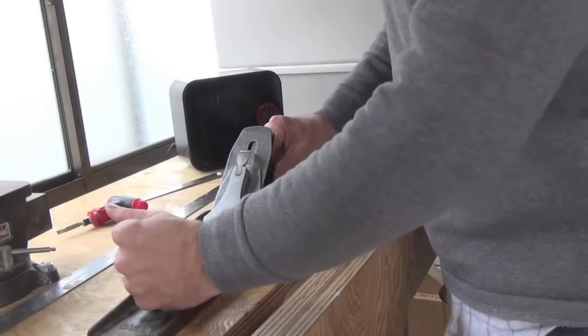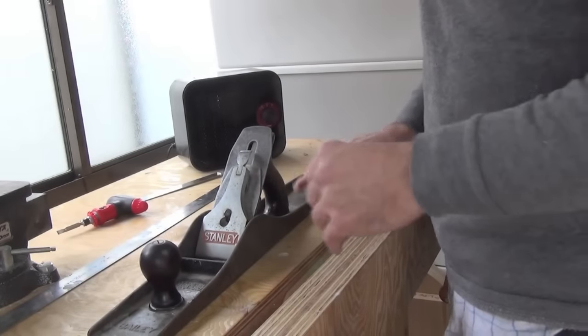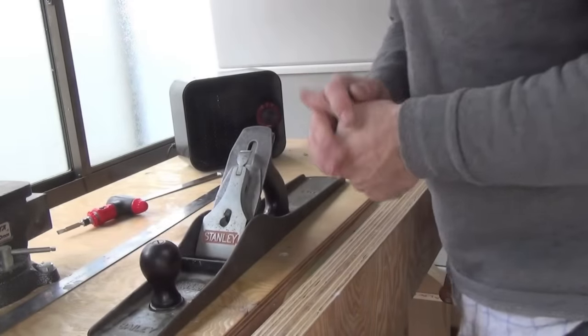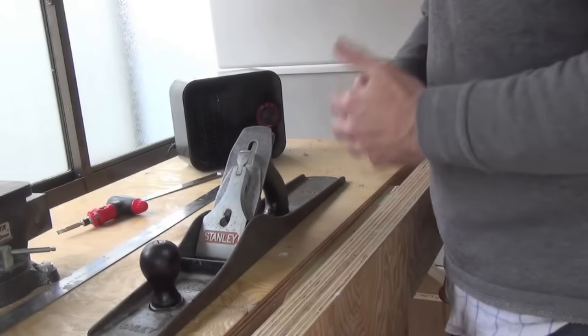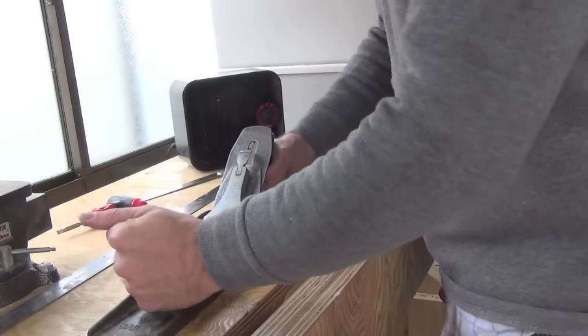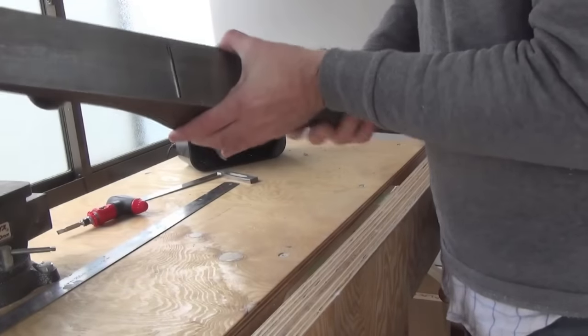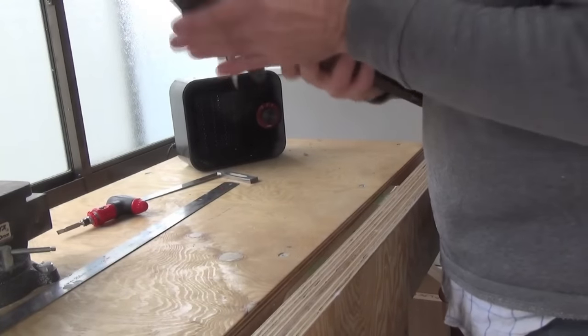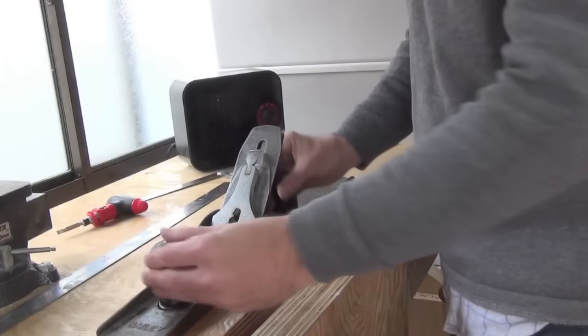Now the first job with a plane of this type—well people do it in different orders. Some people take all the parts off, clean the rust, and then restore it. I'm going to do it in a different order. First I'm going to true up the sole and sides. I'm going to do what's called lapping them.